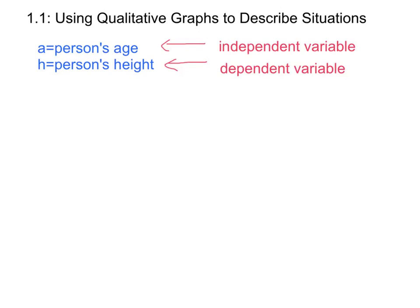A graph can be used to visually show how the two variables are related. The independent variable is always represented by the horizontal axis. The dependent variable goes on the vertical axis. In this section, we'll be making qualitative graphs, which just means that there's no scaling on either of the two axes, meaning we're not going to put any tick marks or any numbers labeled along these axes.